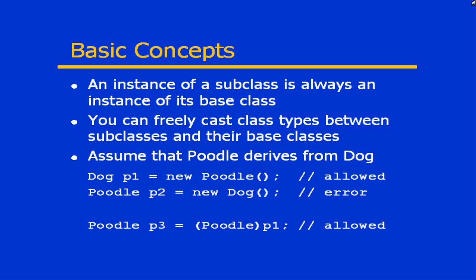Because an instance of a subclass is always an instance of its base class, you can freely cast between these different types. Assuming we have a class called Poodle that derives from a class Dog, if I created an instance of a poodle, that might be castable into a dog. Notice the code here in this example — the variable p1 is typed as type Dog. Can I store a new instance of a Poodle class into p1 if p1 is type Dog? Yes, because a poodle is a dog, so p1 is implicitly castable to Dog.